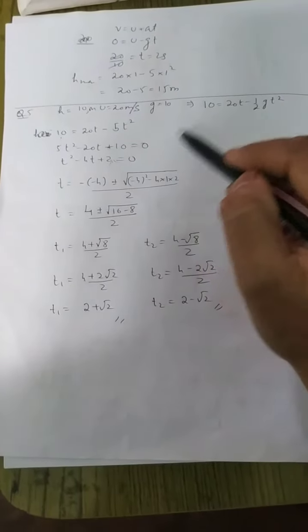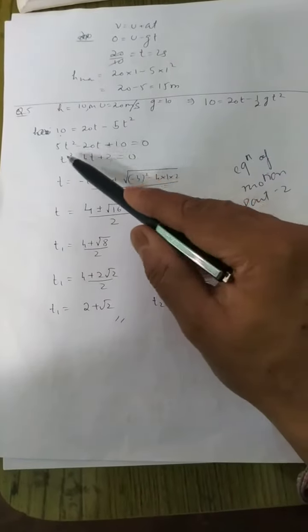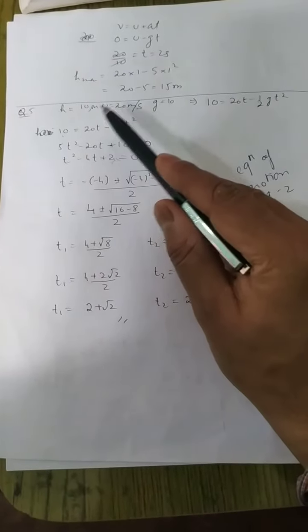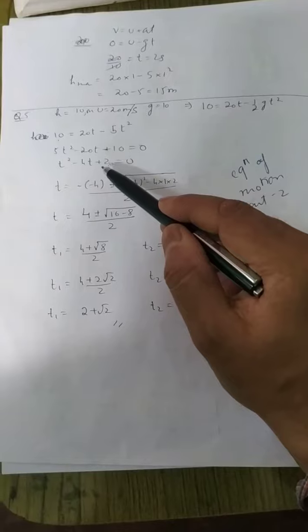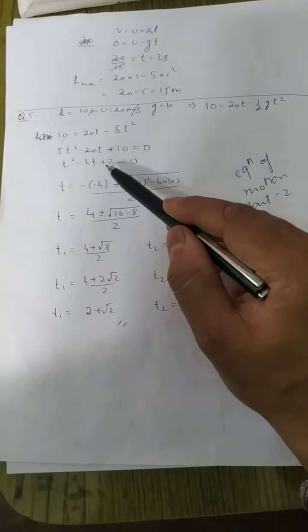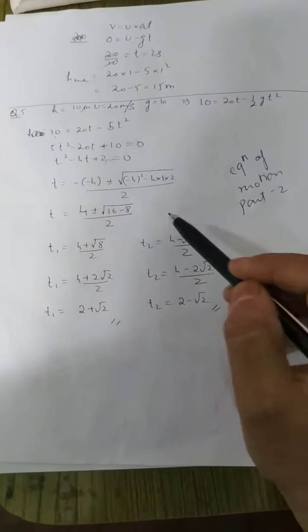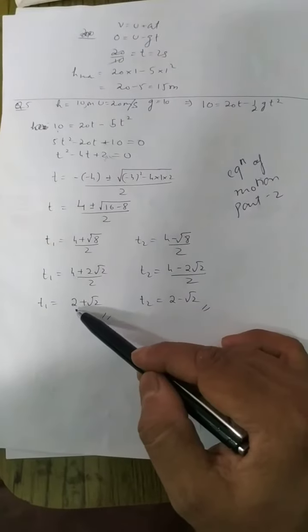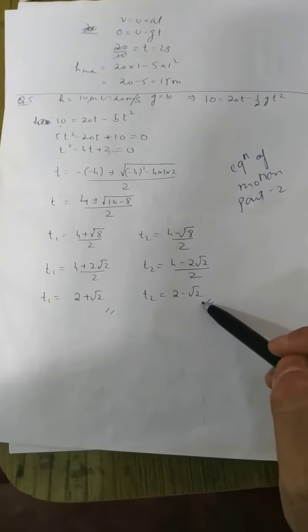That is the error in that video. If you continue with h equals 10 meters, you get the equation as t squared minus 4t plus 2 equals 0, and when you solve this you will get this result as 2 plus root 2 and 2 minus root 2.